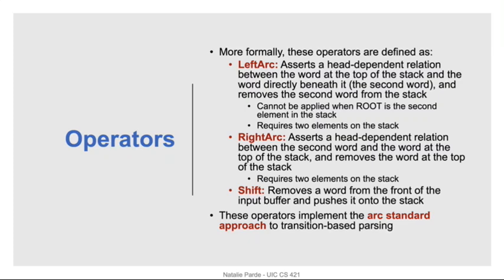Left ARC looks at the word at the top of the stack and the word directly beneath it, and decides that the second word is a dependent of the word at the top of the stack. It assigns a relation between the two and pops the second word from the stack. This operator can't be applied if the root is the second element in the stack, because the root node should be the only thing remaining on the stack at the very end of the parse. Right ARC looks at the same two words and decides that the top word is a dependent of the second word on the stack — it assigns a relation and pops the first word. Shift just removes a word from the front of the input buffer and pushes it onto the stack.